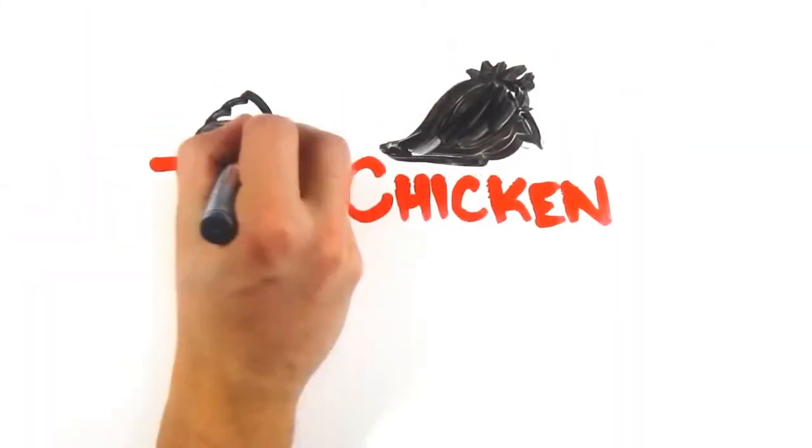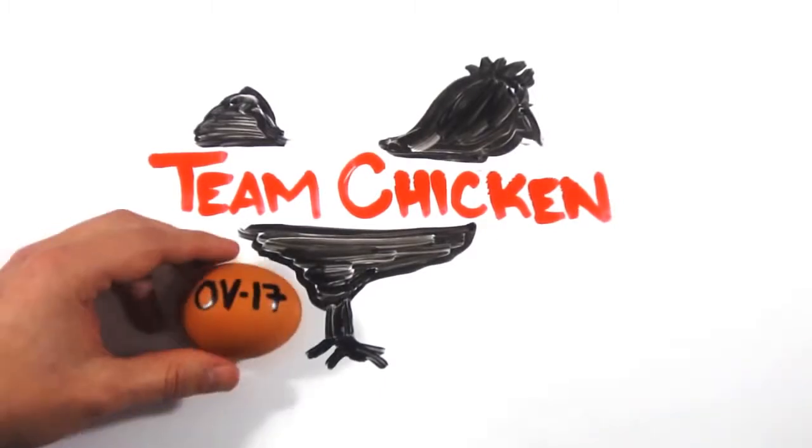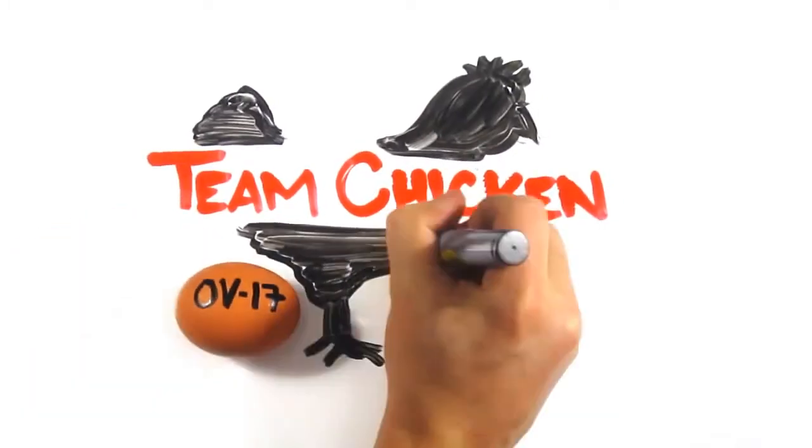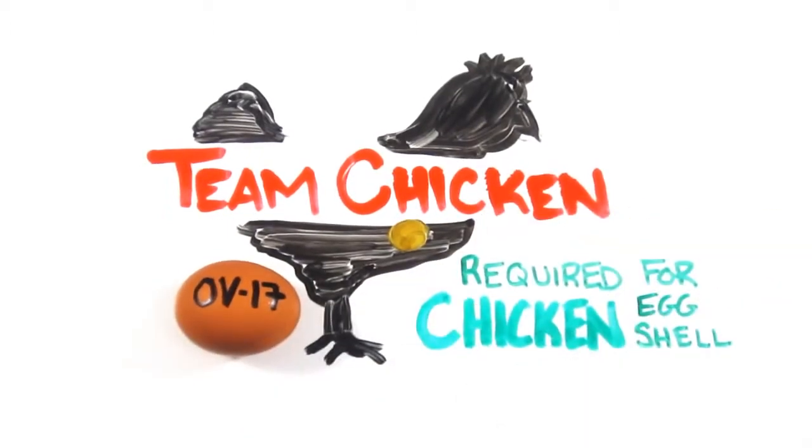On the one side, we have team chicken. Research suggests that the protein essential for the formation of chicken eggs, called OV-17, is only found in chicken ovaries. Without it, the chicken egg shell could not be formed. So without a chicken, you technically can't get a chicken egg.